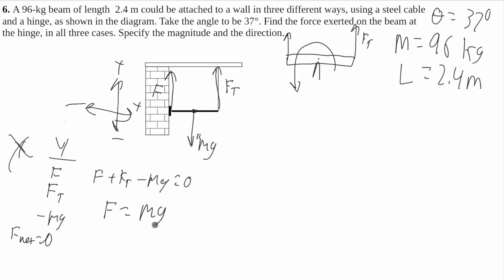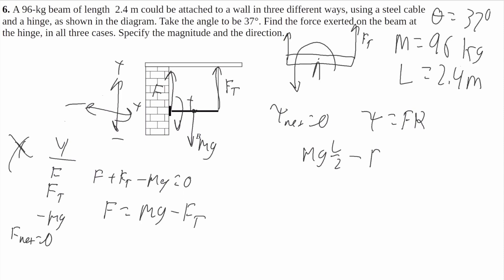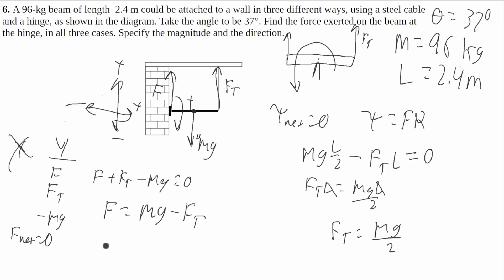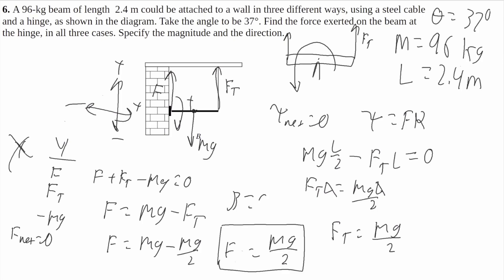So F equals mg minus Ft. Now to find Ft, I'm going to use torque equilibrium. Torque net equals zero; torque equals force times radius. Clockwise will be positive. So mg times L over 2 minus Ft times L equals zero. So Ft equals mg over 2 — the L's cancel, giving Ft equals mg over 2. So F equals mg minus mg over 2, which gives F equals mg over 2. And its angle will be 90 degrees above this bar, since we said it goes vertically upward. And that is your answer.